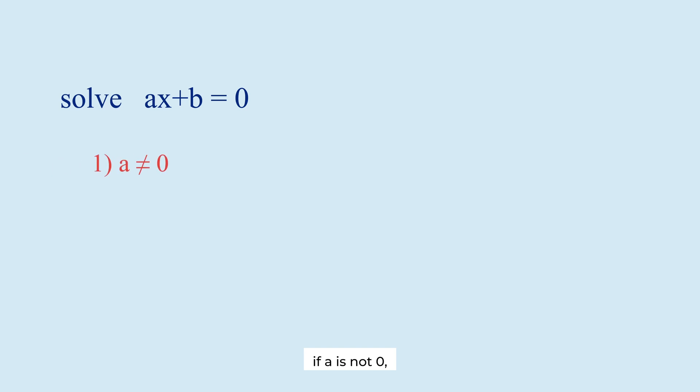If a is not 0, the solution is so simple. x equals minus b over a.